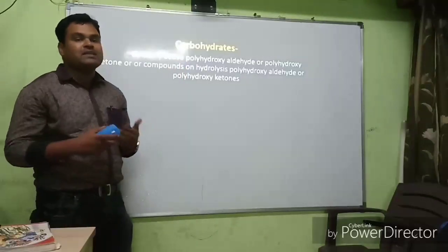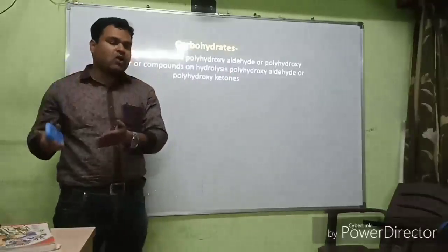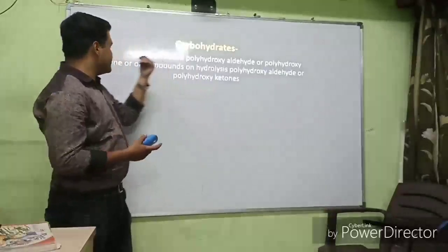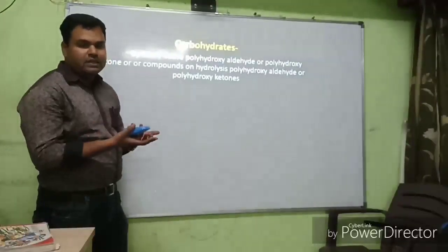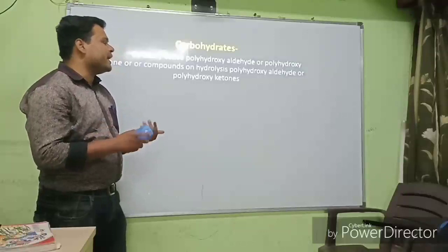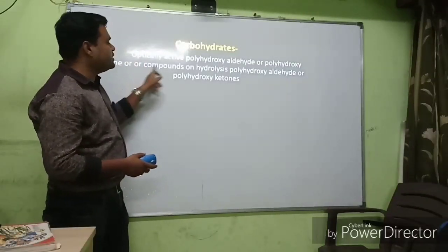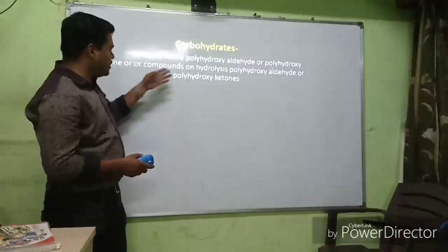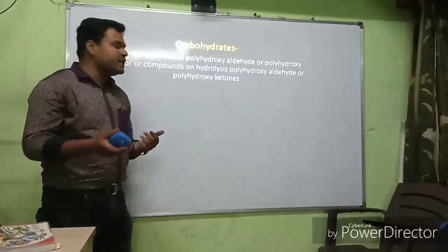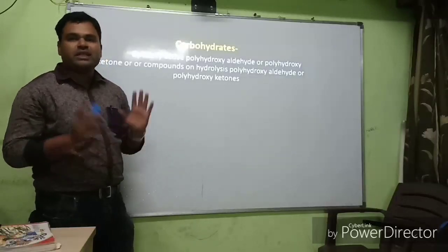Polyhydroxy means it contains many hydroxy (OH) groups. Polyhydroxy aldehyde means it contains OH groups and an aldehyde group; polyhydroxy ketone means it contains OH groups and a ketone. Alternatively, carbohydrates can be defined as compounds which on hydrolysis give polyhydroxy aldehyde or polyhydroxy ketone — you can also write this definition in your exam.